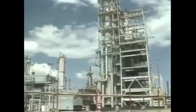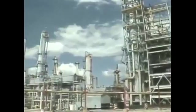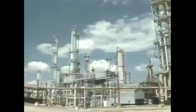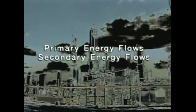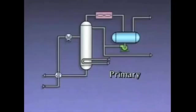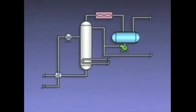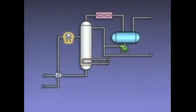For a distillation system, the term energy balance means that the heat that goes into a distillation tower must be equal to the heat that goes out of the tower. The energy flows for a distillation tower can be divided into primary energy flows and secondary energy flows. Primary energy flows are associated with heat transfer into or out of the system. The primary energy flows illustrated here are the heat input to the reboiler and the feed preheater, and the heat that is transferred out of the overhead vapor in the condenser.